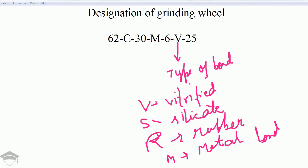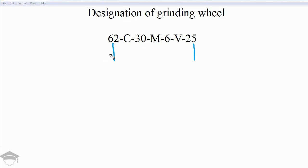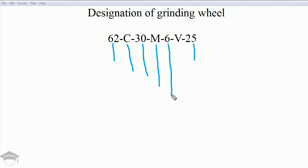In summary: the first and last numbers denote the manufacturer; the second term denotes the type of abrasive; the third term denotes grain size (number of grains per square inch); 'M' denotes hardness (soft, medium, or hard); the next number denotes structure (closed or open); and the final term denotes the type of bond. I hope you found the video helpful — please share, like, and subscribe to my channel.